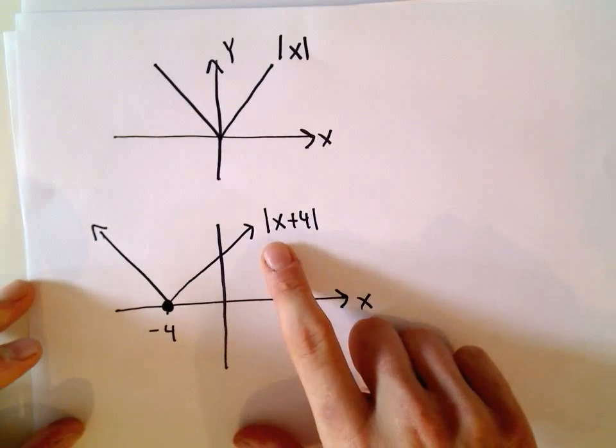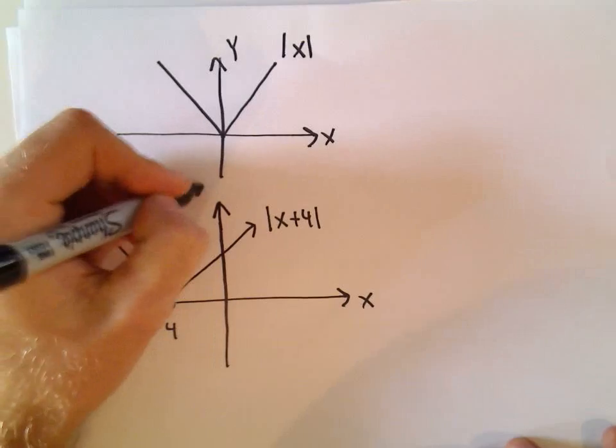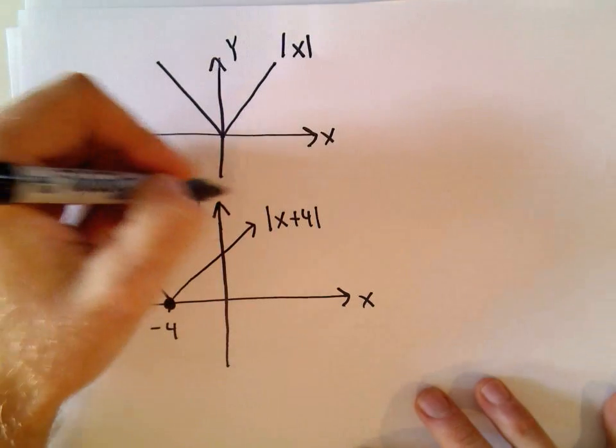And that makes sense, right? If you plug negative 4 in, you're going to get 0 out. So that's how I used to always even remind myself, you can always plot points.